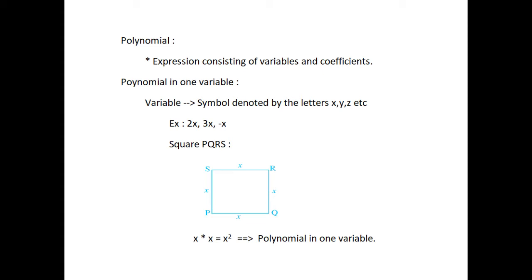Consider the square PQRS in the figure. Its area is x into x equal to x squared units. Here, x squared is an algebraic expression. Expressions of this form are called polynomials in one variable.